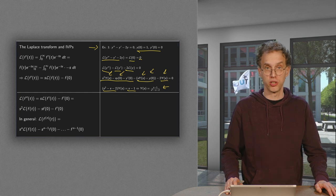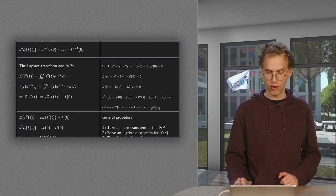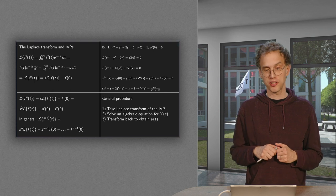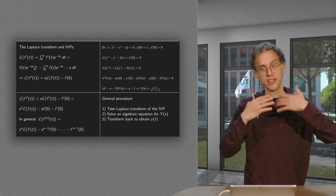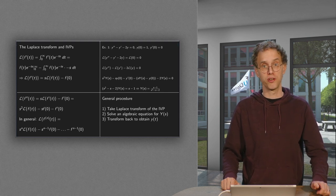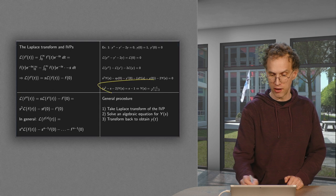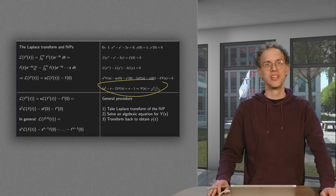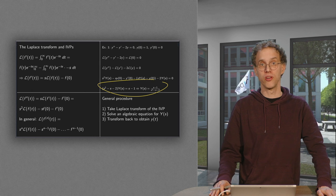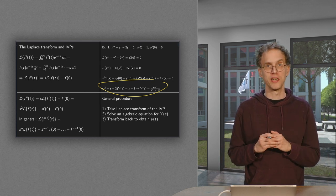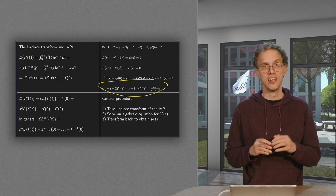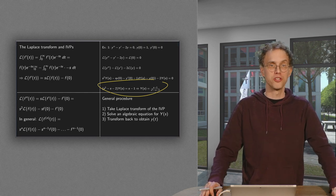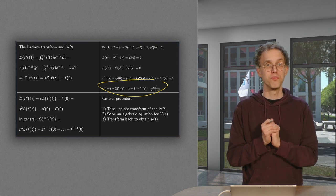So there we have our solution of the differential equation — well, it's the Laplace transform of the solution. The method works as follows: first, take the Laplace transform of the initial value problem; then solve the algebraic equation for Y(s), which is fast; and then transform back to y(t). And there is the catch: this back transformation in general requires a nasty complex contour integral and can be very tricky. How we solve that problem will be shown in later videos with further examples.